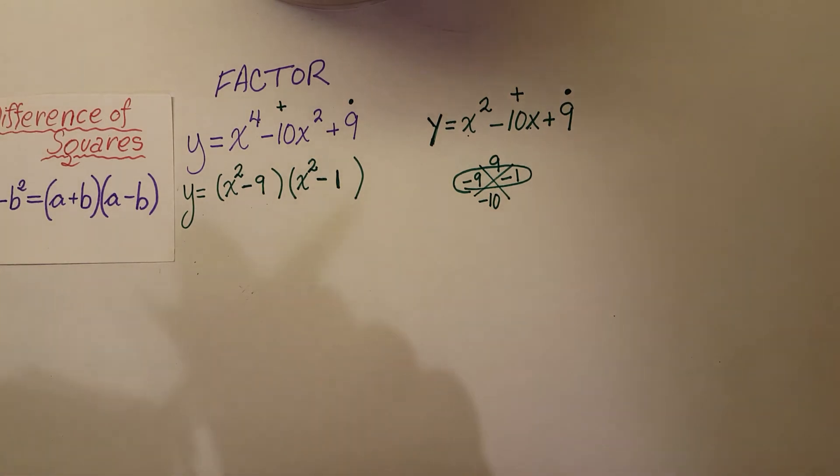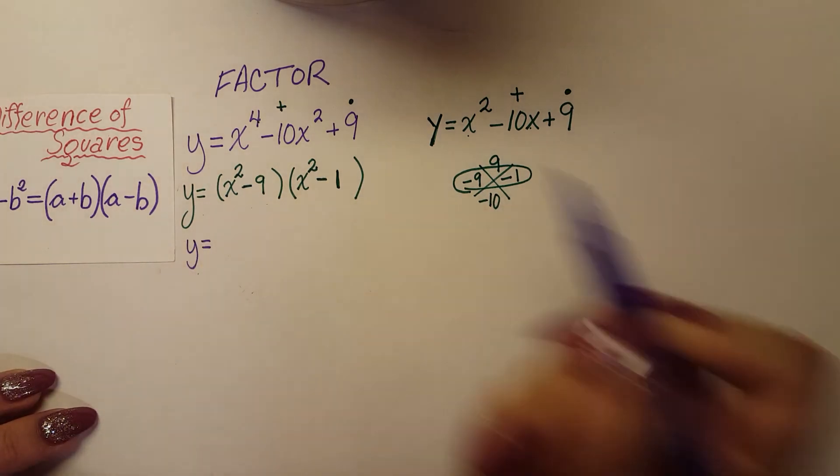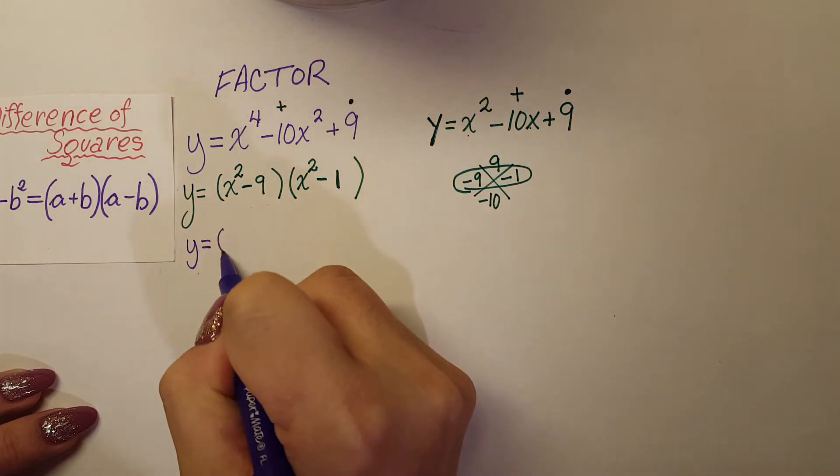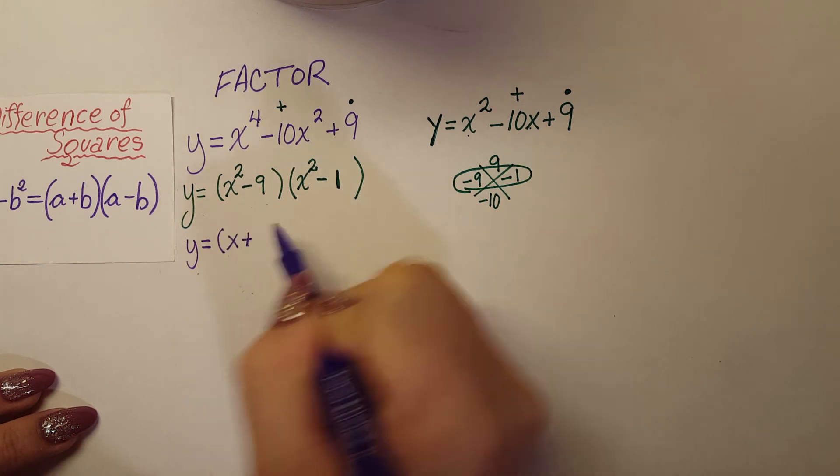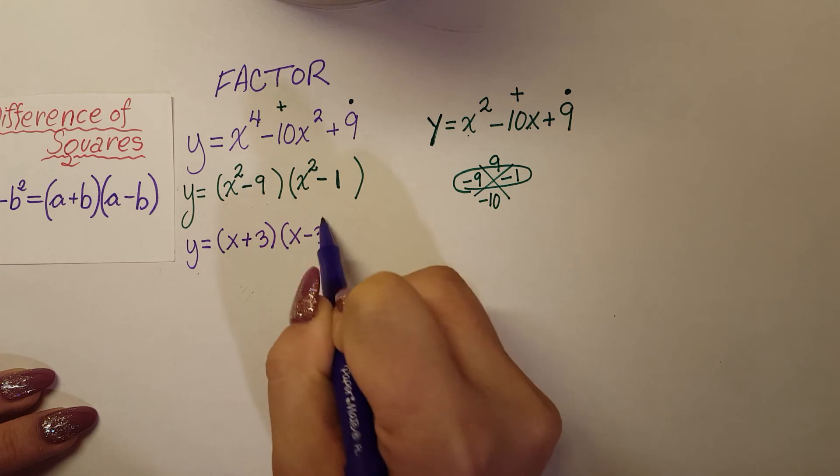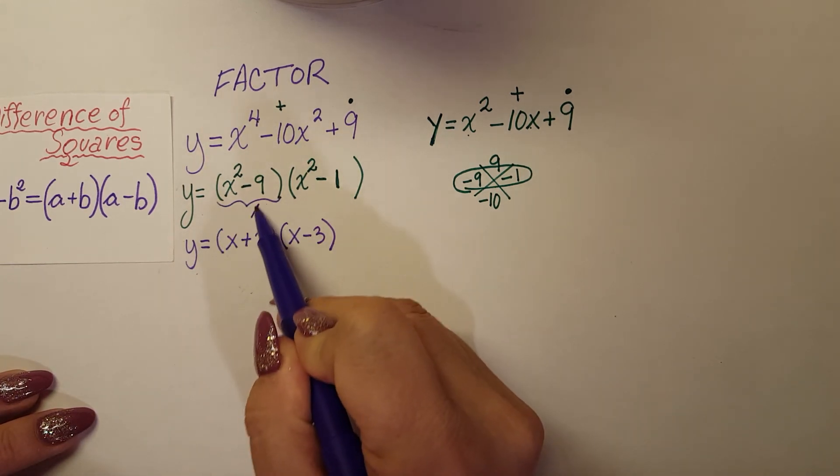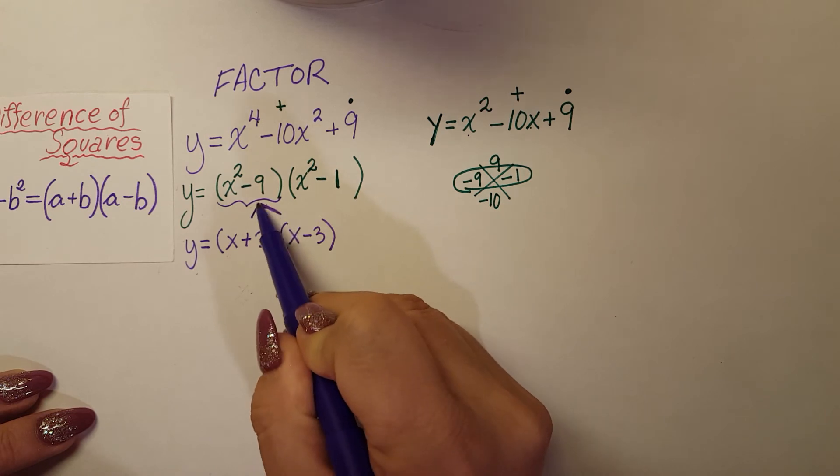Alright, so changing, I'm going to go ahead and change my color again. So I'm going to get my factors down. So this gives me x plus 3 and x minus 3. Right here, my difference of squares factored into these two.